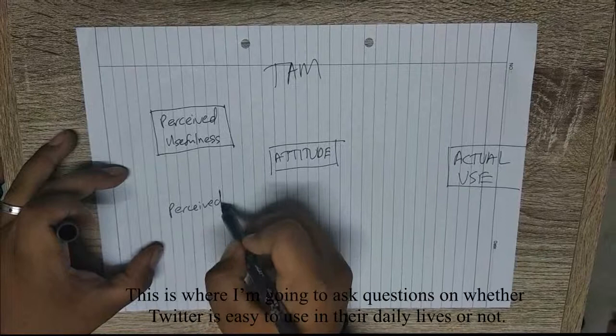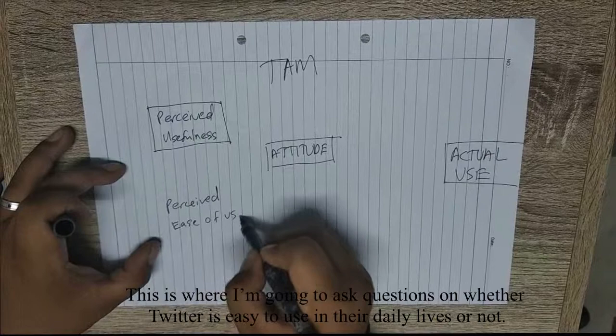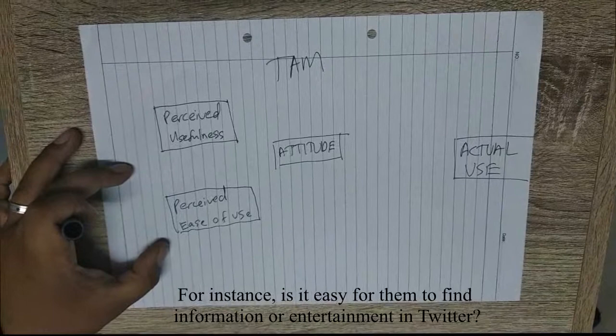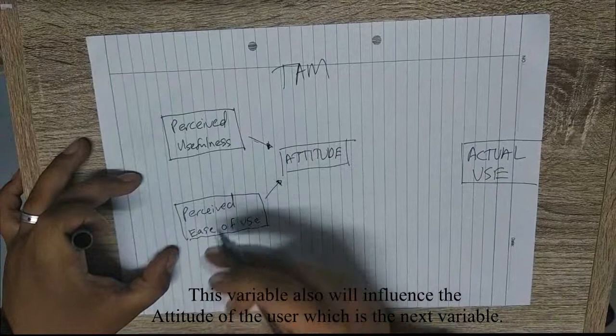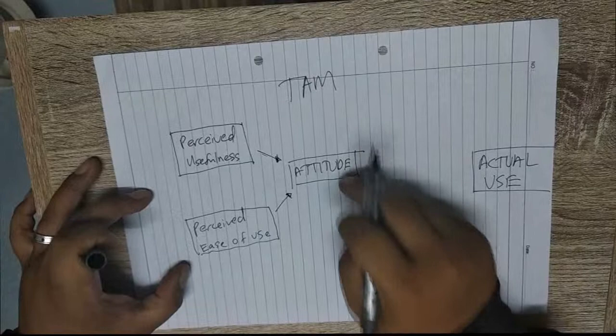Next, I'm going to test the second variable, which is Perceived Ease of Use. This is where I'm going to ask questions on whether Twitter is easy to use in their daily lives or not. For instance, is it easy for them to find information or entertainment on Twitter? This variable will also influence the attitude of the users.